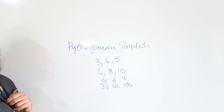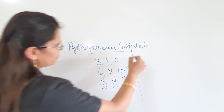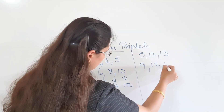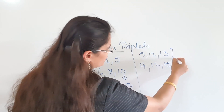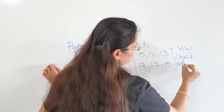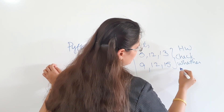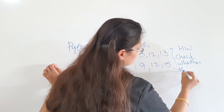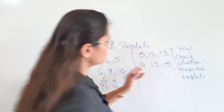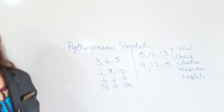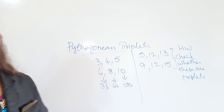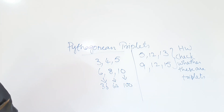Check whether 5, 12, 13 and 9, 12, 15 are Pythagorean triplets or not. This is homework — check whether these are triplets.